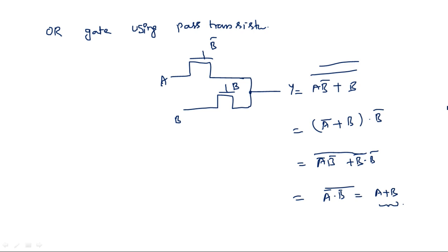The problem with pass transistors is that 100% voltage swing will not occur. If we give 5 volts and 0 volts, this full swing may not occur because of the threshold voltage. The threshold voltage for NMOS is positive and for PMOS is negative, so at the output one is subtracted and one is added. Other than this limitation, pass transistors are very useful — they take very few transistors to implement any type of logical function.